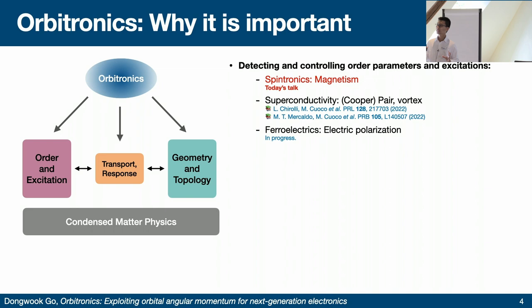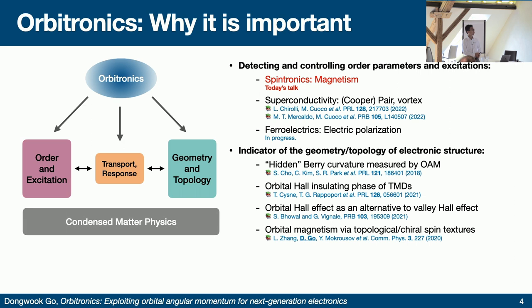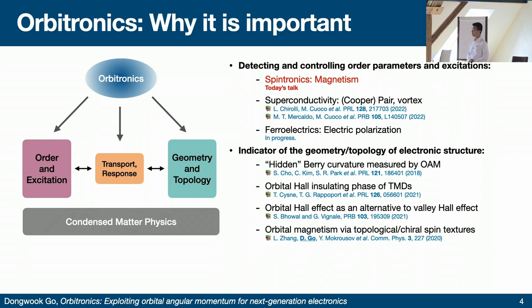Orbitronics is not only a new type of transport phenomenon, but it covers both these major pillars. For order and excitations, orbital current can be thought of as a new kind of probe to detect and manipulate order parameters. On the side of geometry and topology, orbital angular momentum is very important because by its definition it is a dissipationless current loop — making it an indicator of geometry and topology. There are many interesting works in this direction if you look at these papers.